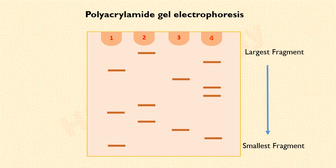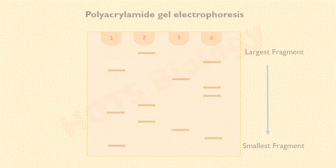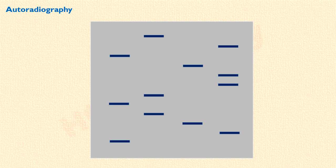Smallest fragments migrate to the maximum distance in the gel, and the largest fragment migrates to the minimum distance. The next step is determination of the sequence of the DNA segment. Since Sanger radio-labeled the primers in each reaction mixture, an autoradiograph of the gel was obtained. An autoradiograph is a photograph of the gel produced by radiation from radioactive material present in the partial DNA fragments in the gel.